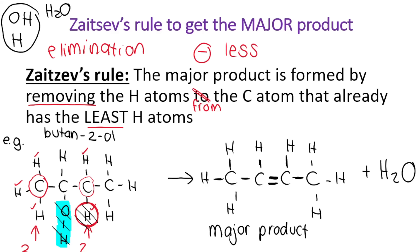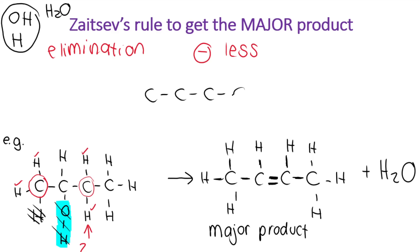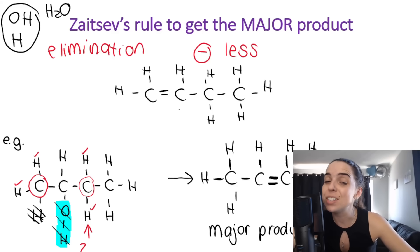The minor product will not follow Zaitsev's rule. Zaitsev's rule says remove the hydrogen from the carbon that has the least, so we will do the opposite. Instead of removing this one, which had two hydrogens, we will remove this hydrogen, which has three hydrogens. The minor product has four carbons — fill in all the H's that are still there. The position of the double bond will need to move because I've removed hydrogens from different carbons. That would be the minor product — a completely different structural formula and name. I hope that helped you understand the difference between major and minor.